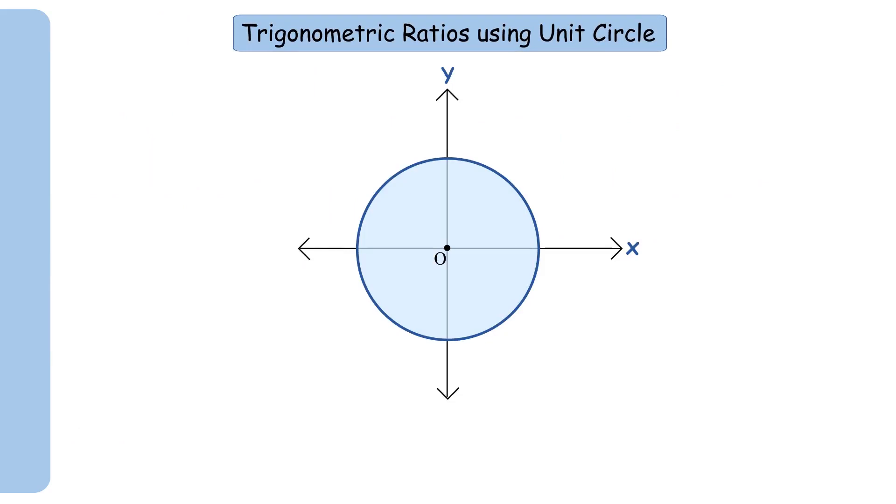Let's start with 0 degrees, right at the positive x-axis. The point on the circle is (1, 0). This means the x-coordinate is 1 and the y-coordinate is 0. Thus, sin of 0 degrees is 0 and cos of 0 degrees is 1.